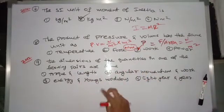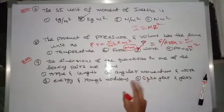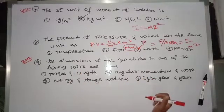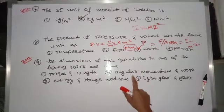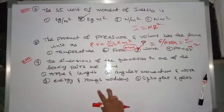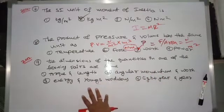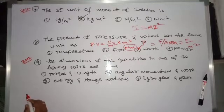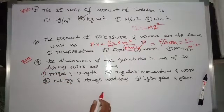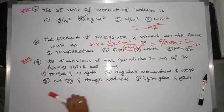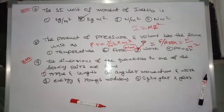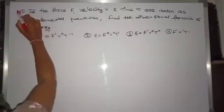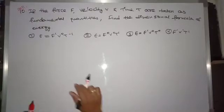The next question asks: the dimensions of the quantities in one of the following pairs are the same. What is the pair? The answer involves torque and momentum. You can go through all the previous lectures to find the formulas or expressions for all these physical quantities. Option one is correct.